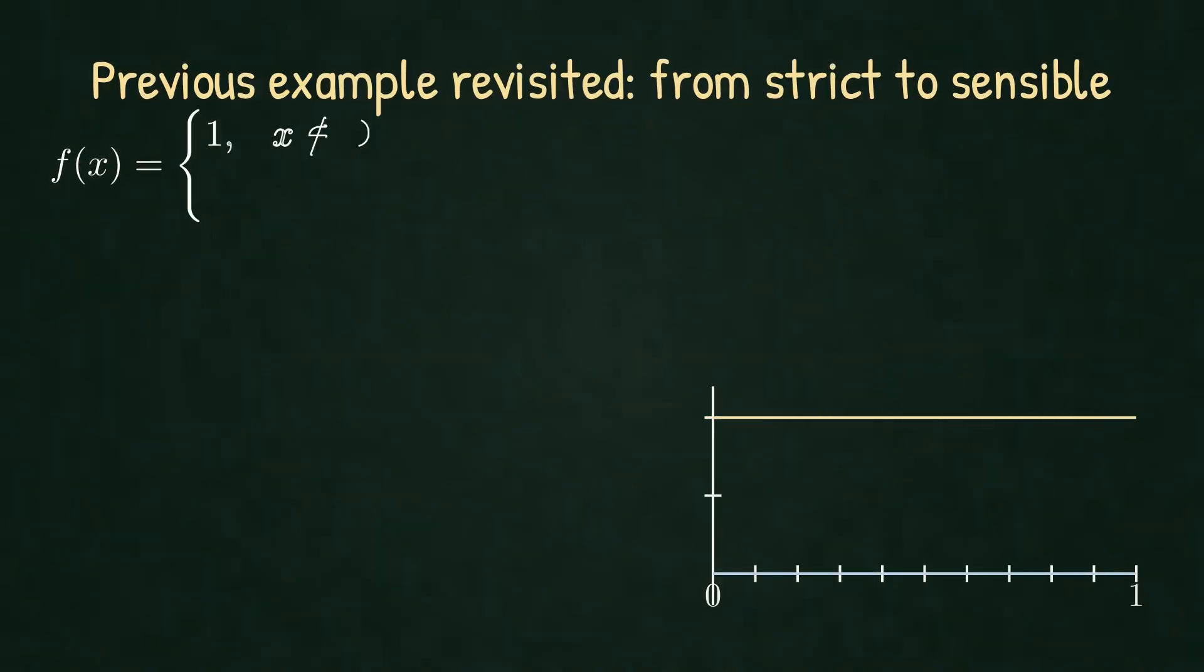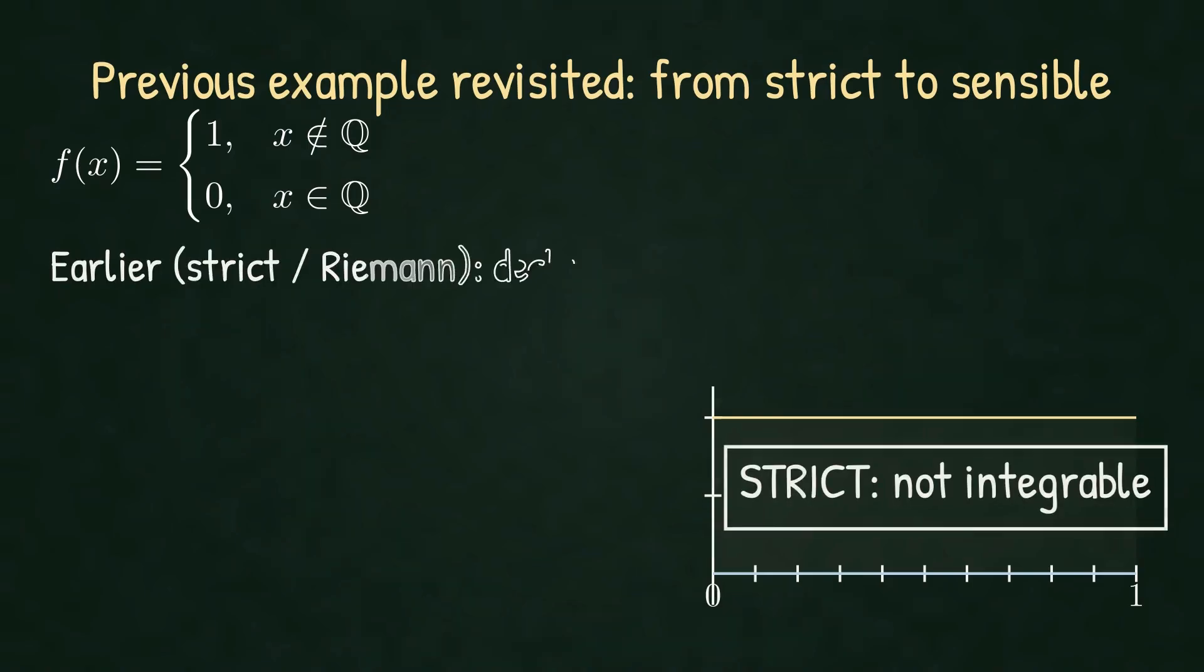Remember the Dirichlet function: one on the irrationals, zero on the rationals. Earlier, we used a strict Riemann approach. If different uniform sequences give different averages, they declare it not integrable. Period.